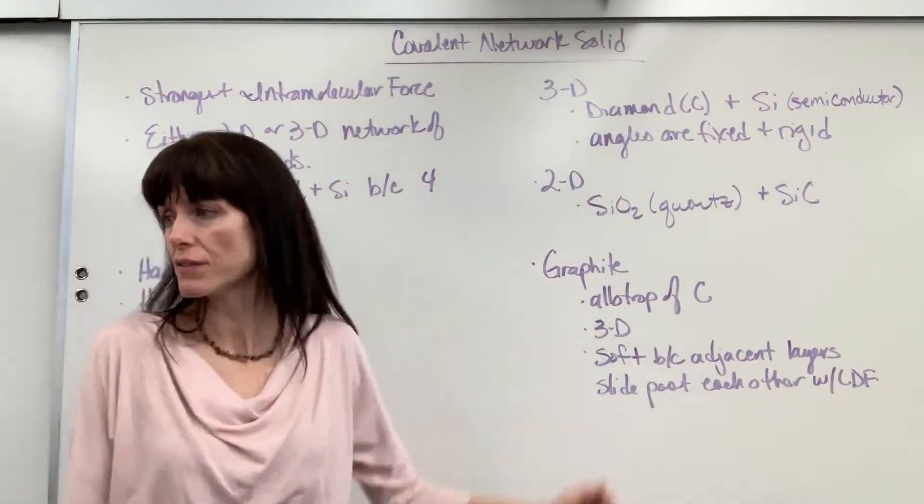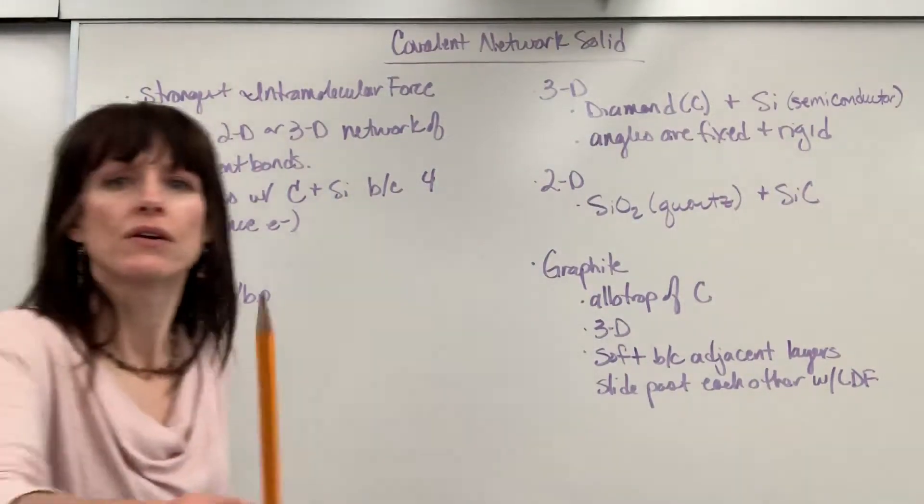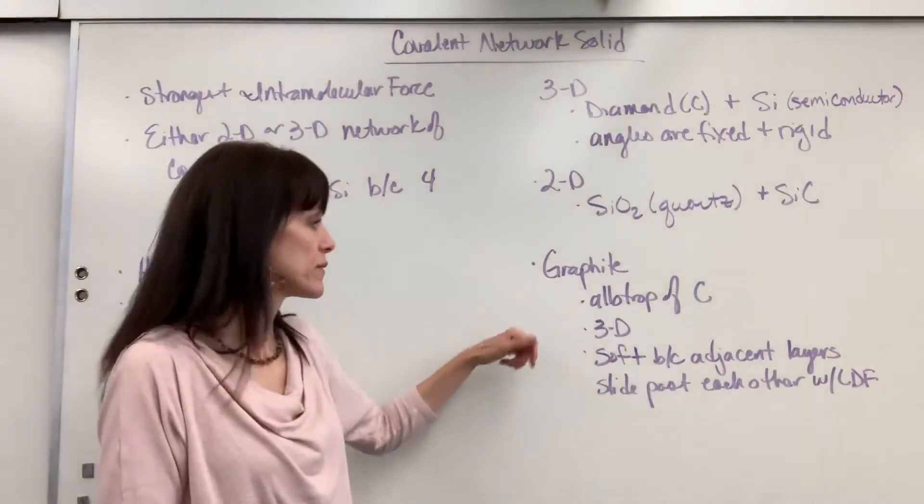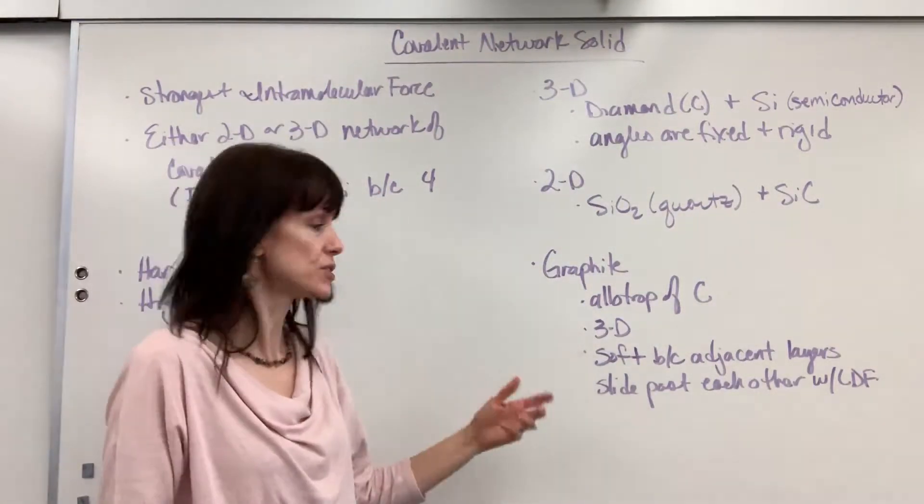Graphite. So the end of your pencil, here I have it. Graphite right there, end of the pencil. There it is. That's an allotrope of carbon. It's three-dimensional.